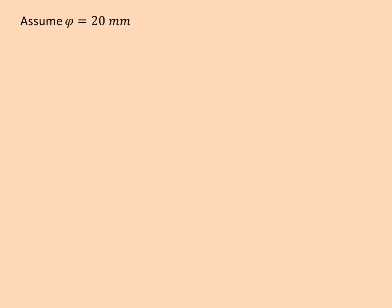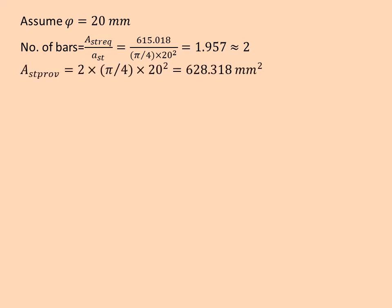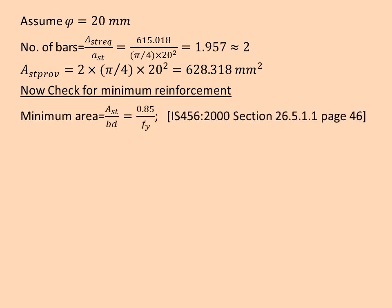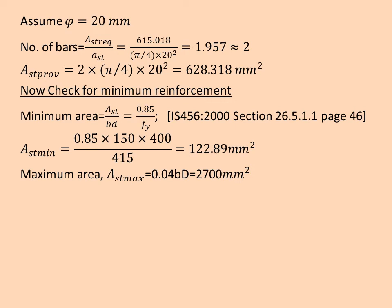We assume the diameter equal to 20mm. Then we find the number of bars, which is equal to Ast required by area of 1 bar. When we substitute the values, we get 2. Then we will find Ast provided. After that we check the minimum reinforcement. We find the minimum area and the equation is given in the code. Then we find AS. Then we find the maximum area: Ast max equal to 0.04·b·overall depth. When we check the values, it satisfies the condition and hence it is safe.